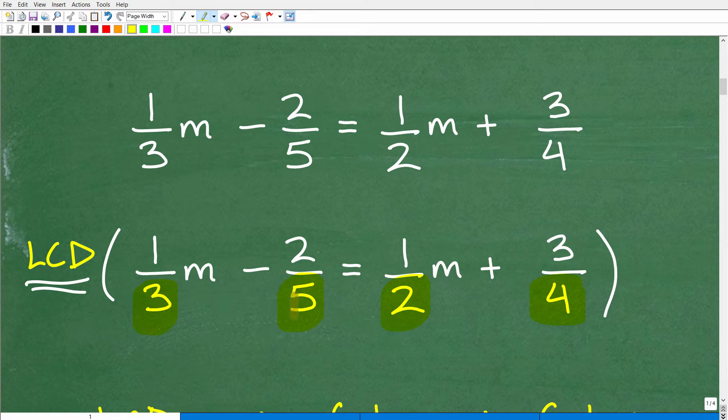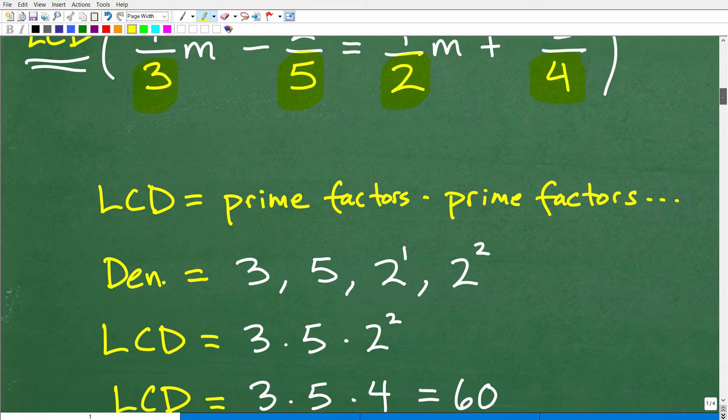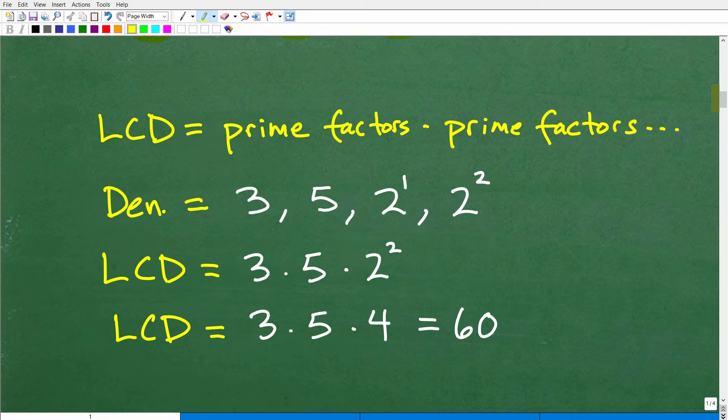Hopefully, all of you out there can do this because this is kind of basic arithmetic. But I bet you a lot of you probably would be a little confused about what is the LCD. When we're talking about little easy numbers, if it's just 3 and 5, the LCD is 15. Or 5 and 2, the LCD is 10. Or 2 and 4, the LCD is 4. But what about all of these numbers?